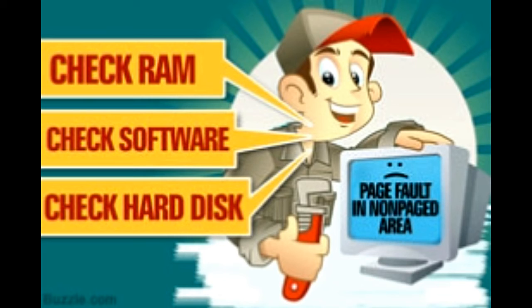How to solve this error? When this error occurs and the system crashes, the first thing you should try is to reboot your PC and log in again. There are chances that your system will restart and you will be able to log in normally without the crash reoccurring. If this happens, you don't need to take any further action, as Windows has probably already resolved the issue. If however the BSOD occurs again before you can log in, you will need to run the following series of checks.